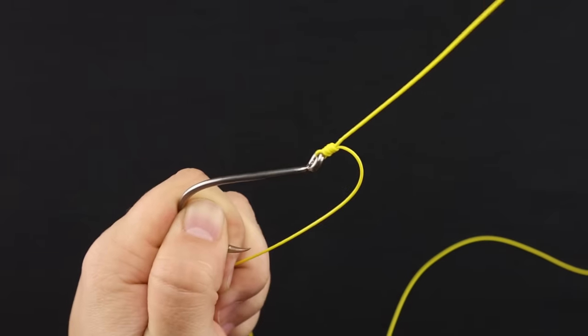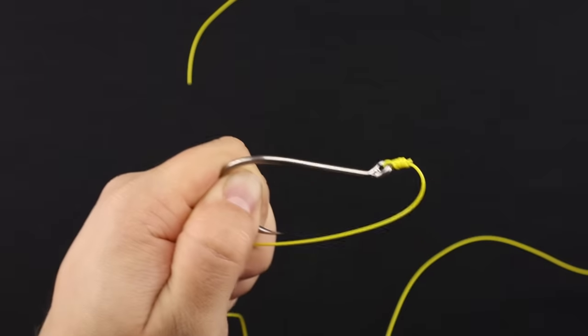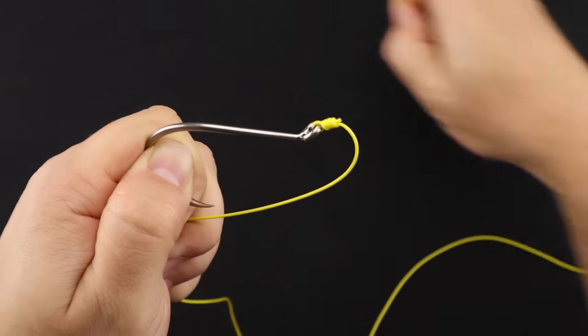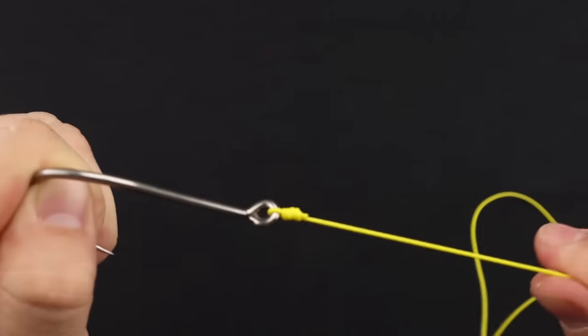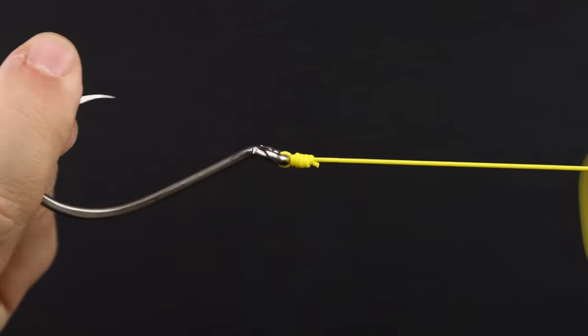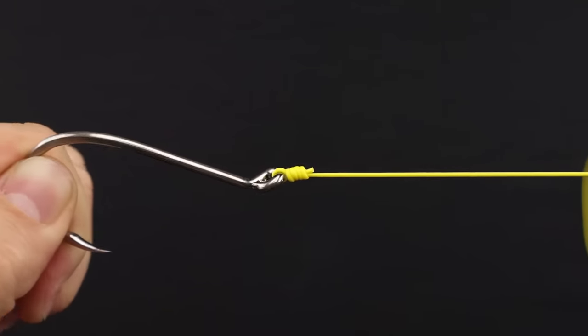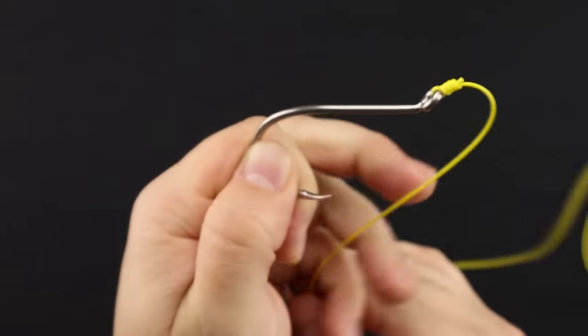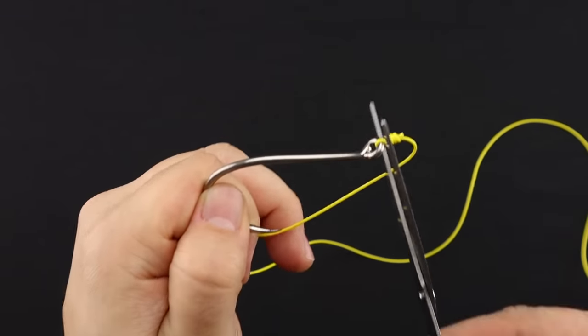So with your tag end, go ahead and cut that off. You can cut that off as close to the knot as you like. What you're left with is the completed uni knot. And now I'm going to demonstrate with a monofilament line so you get to see how that looks.